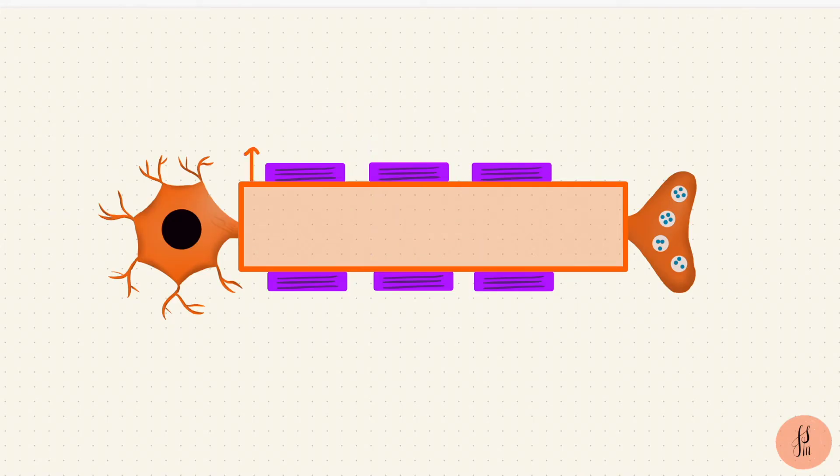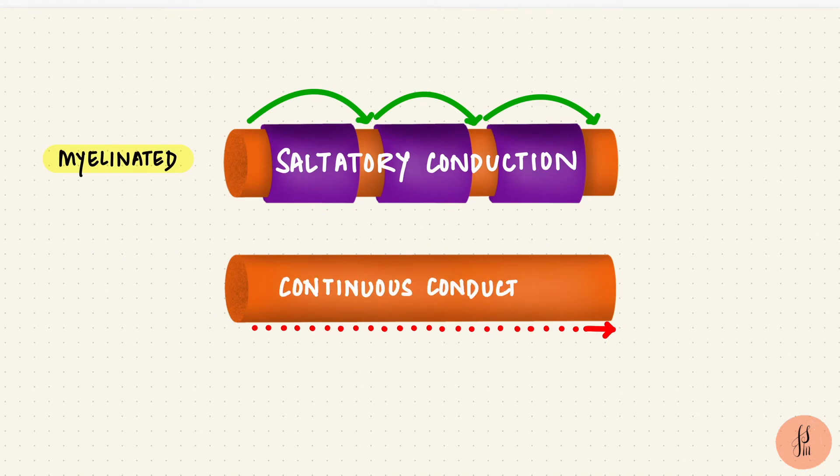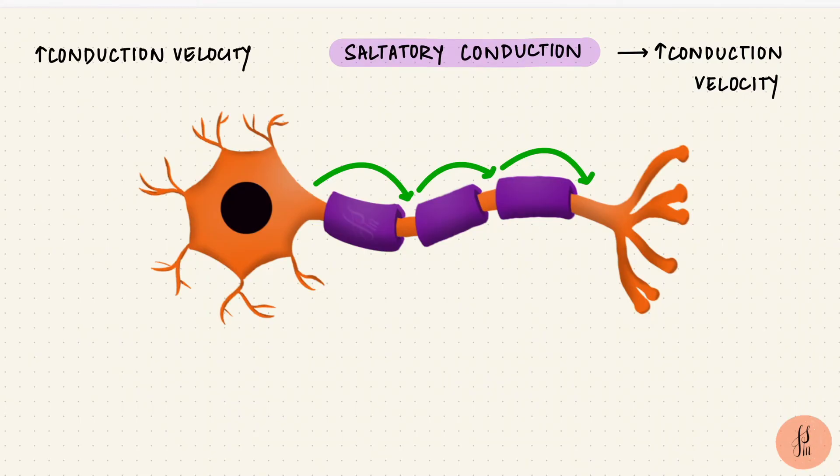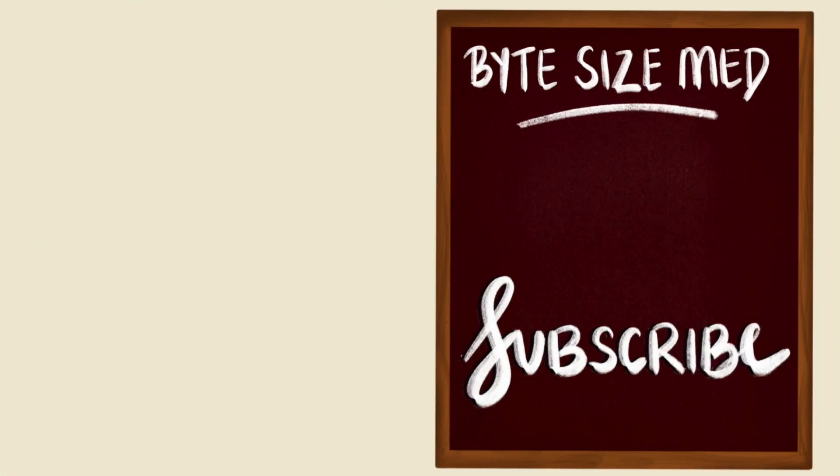So the action potentials happen only at the nodes and not in between. So it's like the action potentials are jumping from one node to the next. This is called saltatory conduction and that's how it happens in myelinated nerves, versus continuous conduction that happens in unmyelinated nerves. This saltatory conduction increases the conduction velocity and reduces the energy spent for conducting impulses. Another factor that increases conduction velocity is diameter. Larger nerves that are myelinated have a higher conduction velocity. And that is how action potentials get propagated in myelinated and unmyelinated nerves.